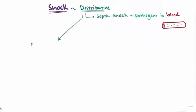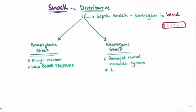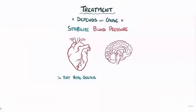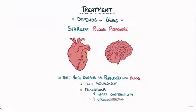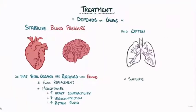Two subtypes of distributive shock are anaphylactic shock, an allergic reaction causing dangerously low blood pressure, and neurogenic shock, where the nervous system is damaged and cannot control the body's blood pressure. Treatment of shock depends on the cause. The general goal is to stabilize blood pressure so that vital organs are perfused with blood. This involves fluid replacement, medications that increase heart contractility, cause vasoconstriction, and retain fluid. Supplemental oxygen or airway protection, for example with intubation, may also be needed.